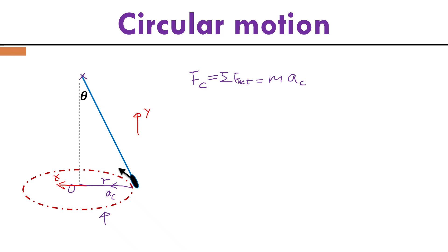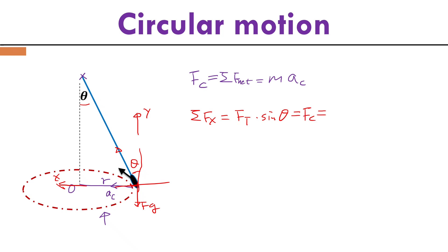If we do a free body diagram, we can identify exactly which force contributes to centripetal force. Taking left as positive x-direction and up as positive y-direction, the point mass is under gravity and tension. If the angle is theta, then along the horizontal direction, sigma Fx equals tension times sine theta — that's the net external force pointing to the center, which is also my centripetal force, equal to mass times centripetal acceleration.